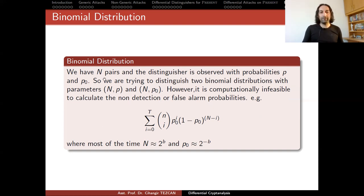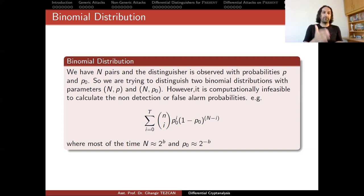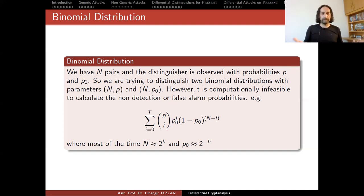We have N pairs and the distinguisher is observed with probabilities P and P0. We have two binomial distributions — we are trying to distinguish two binomial distributions with parameters NP and NP0. For a distinguishing attack between the cipher and a random permutation, this is straightforward. But if attacking a 40-bit key, there is a single correct key and 2^40 minus one wrong keys, so you are distinguishing one binomial distribution of NP0 from 2^40 minus one binomial distributions of NP, which is a bit harder to think about.